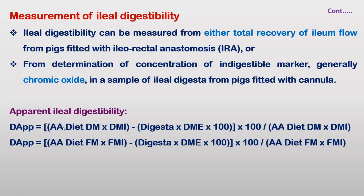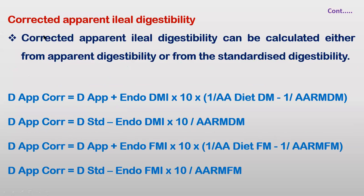By collecting the sample and calculating by difference, we can measure the digestibility of a particular protein feed. There are different formulas to calculate apparent digestibility and true or corrected apparent digestibility. This presentation is available on the university website for download and reference.